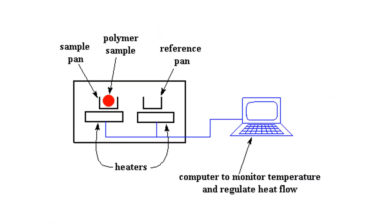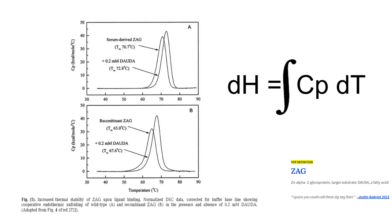The second method is differential scanning calorimetry, or DSC. In DSC, a sample is incrementally heated and compared to a reference sample to measure changes in specific heat. Because under isobaric conditions, the integral of specific heat with respect to time is equal to delta H, this is a very useful method for measuring the delta H term. Here we see an example of researchers showing the optimized delta H of recombinant Zag, a protein, as opposed to wild-type Zag, and its binding to a target fat molecule, DAUDA.